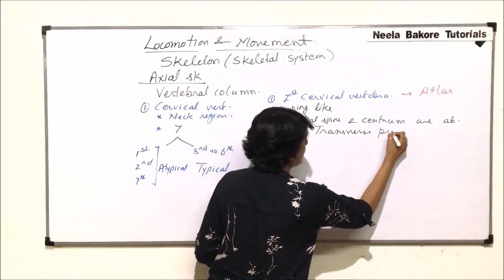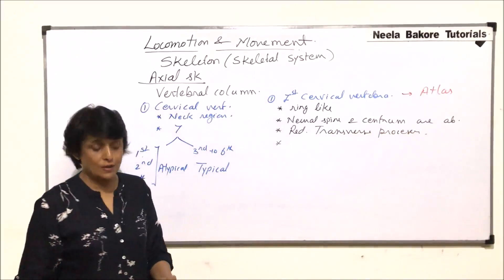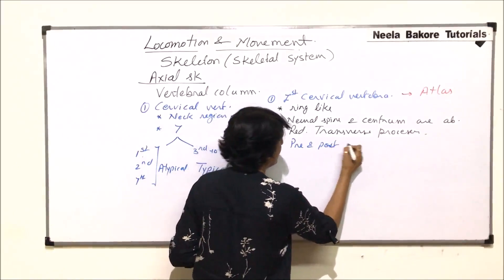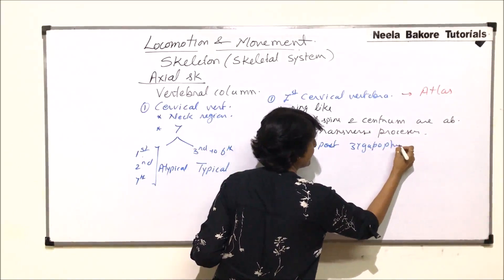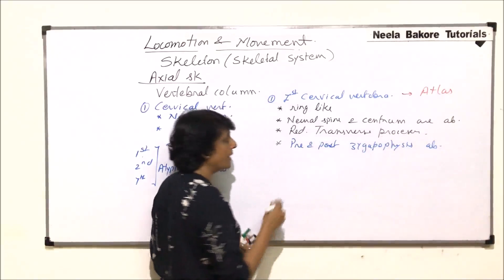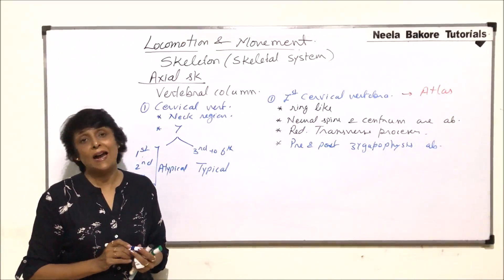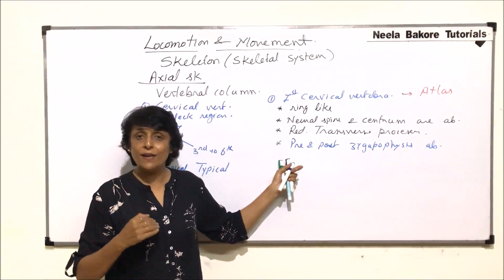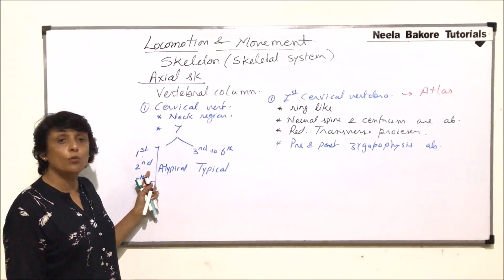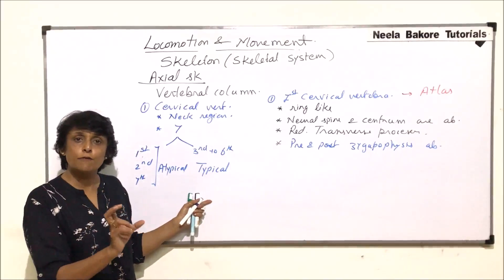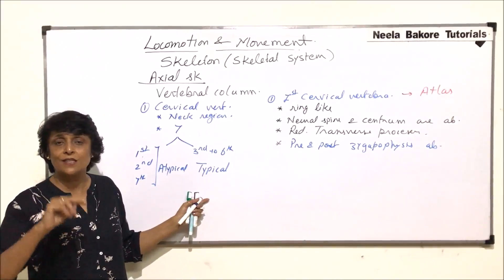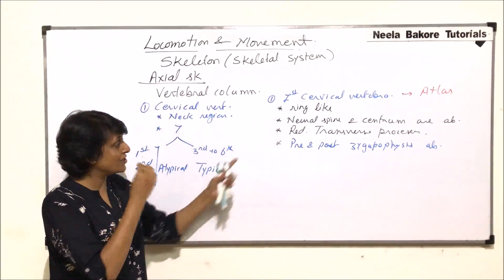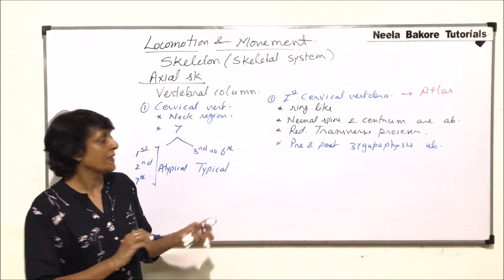The pre- and post-zygapophysis are also absent in atlas. These are the articulating structures through which upper and lower vertebrae connect. Because atlas is the first vertebra, there is no vertebra above it, so there is no need for pre-zygapophysis. Below it is the second cervical vertebra, known as axis, which also has a different structure. Therefore, pre- and post-zygapophysis are absent in atlas.